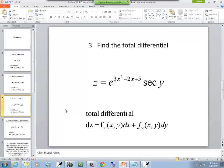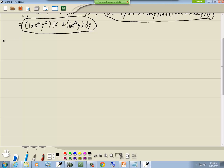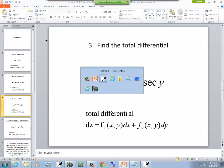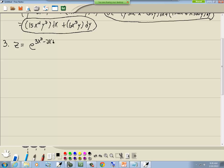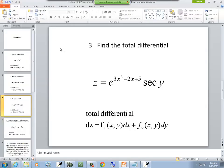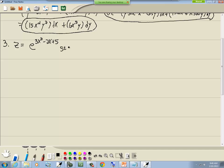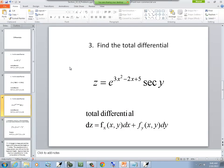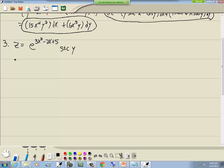Let's look at our third problem. z equals e to the 3x squared minus 2x plus 5 secant y. Same instructions. So dz, we're going to take the partial with respect to x.